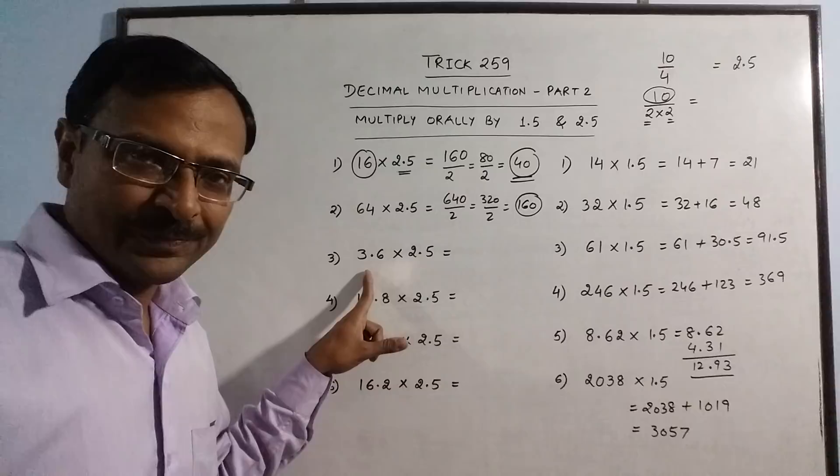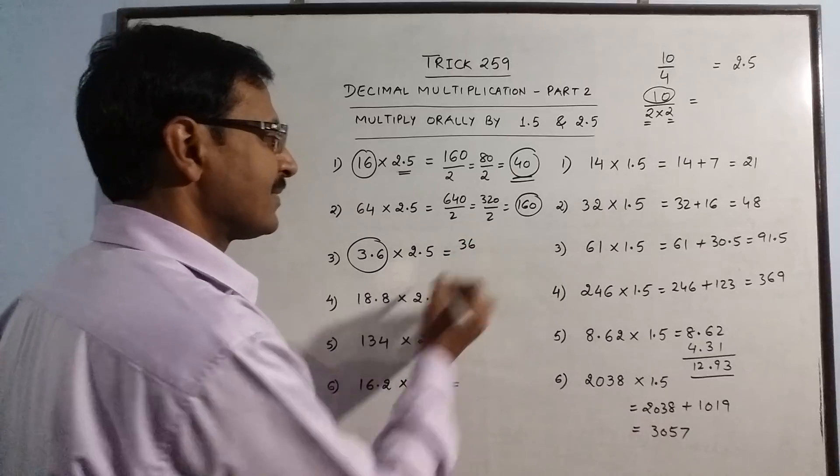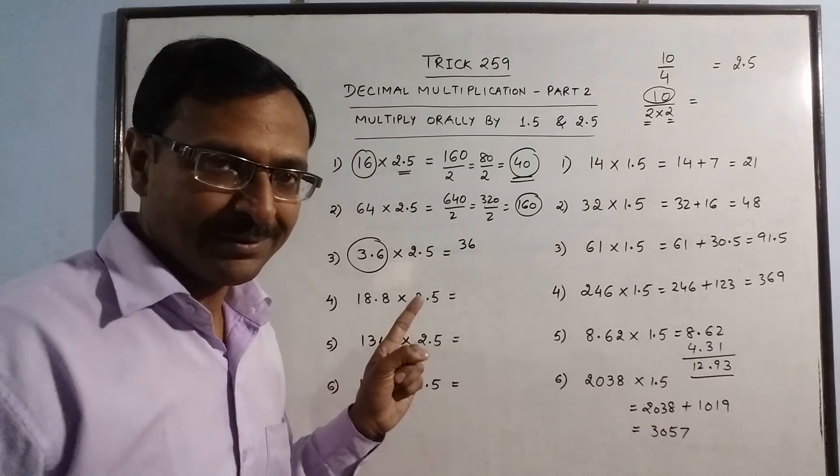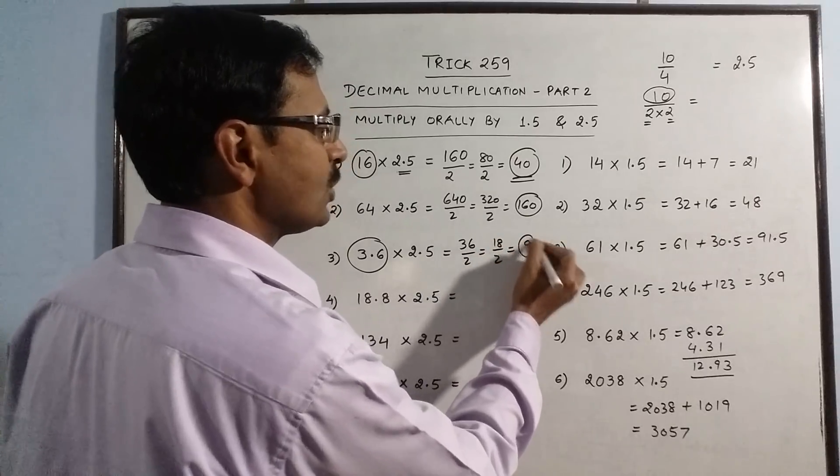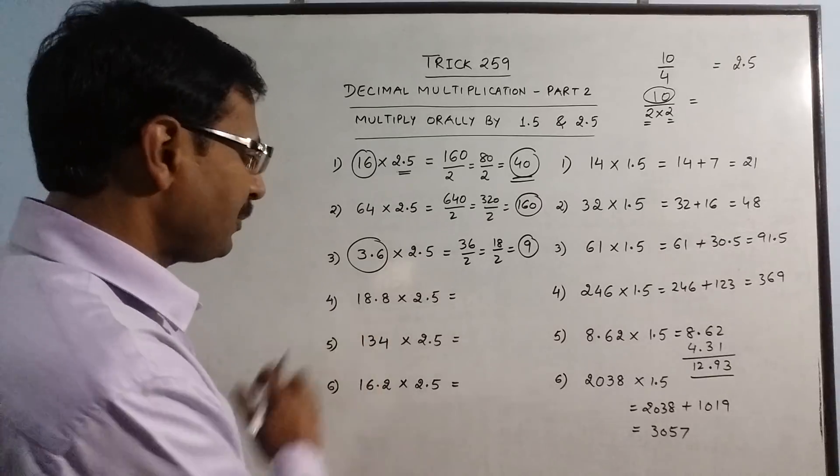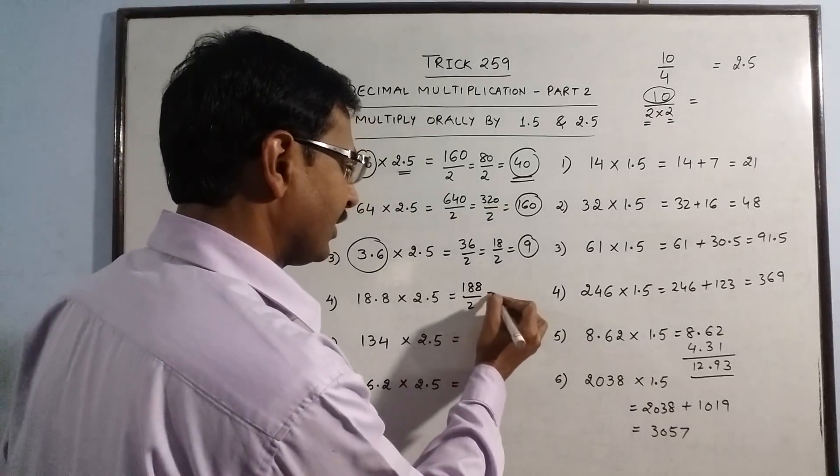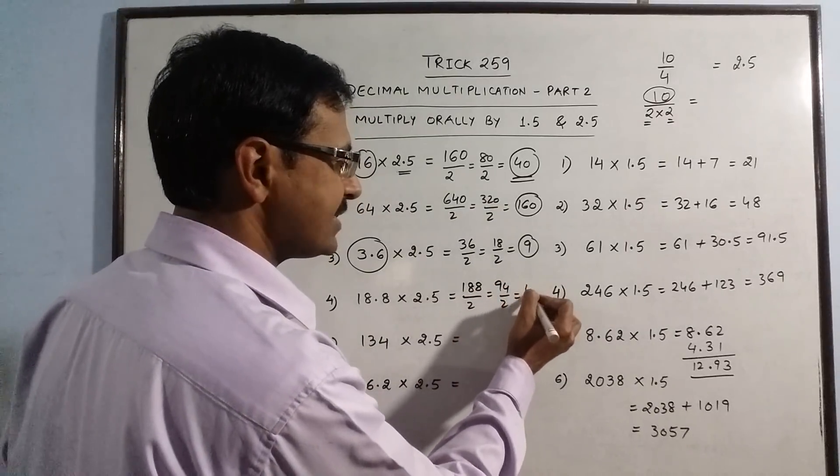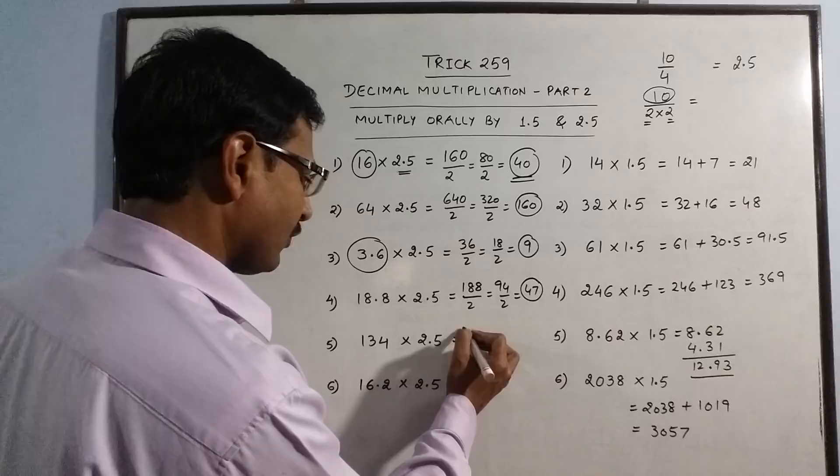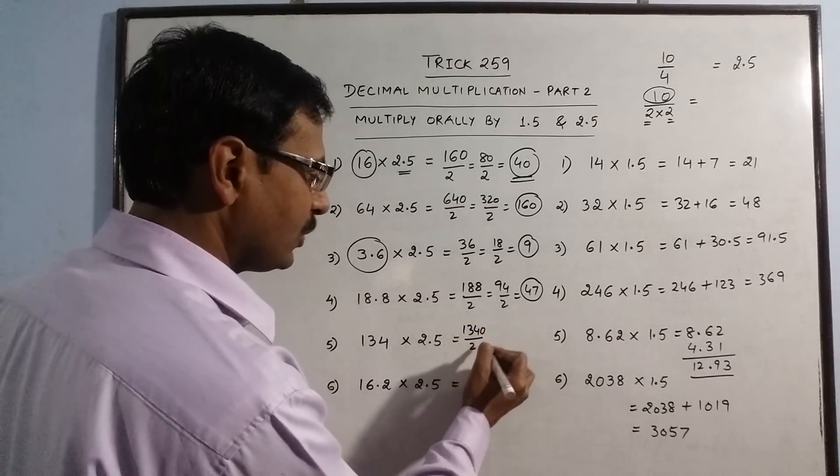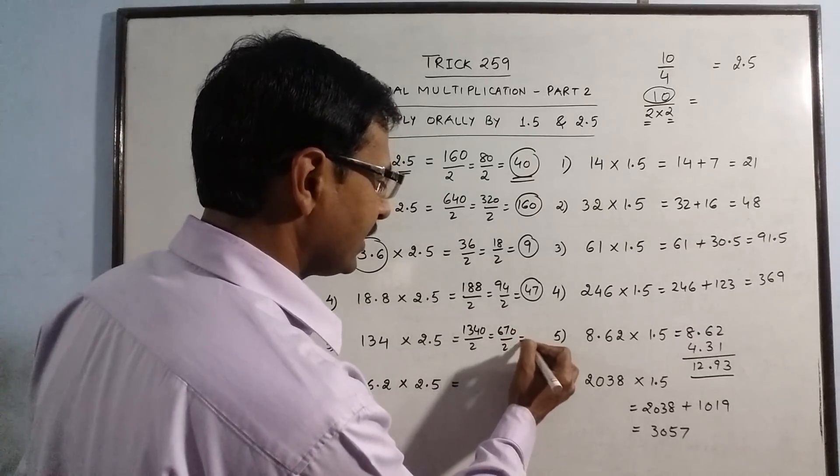Decimal multiplication by 10 is very easy. 3.6 becomes 36 when you multiply this by 10, and then half 18, and half 9, which is your answer. 18.8 becomes 188 when you multiply this by 10, half 94, half 47. 47 is your answer. 134: so 1340, divide by 2 you get 670, again divide by 2 you get 335, which is your final answer.